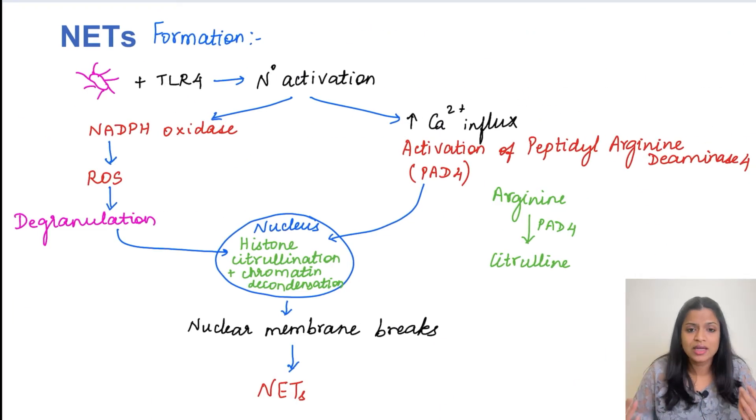So moving on, how do these neutrophil extracellular traps form? So initially the bacteria is going to interact with the toll-like receptor. So that will lead to the activation of these neutrophils.